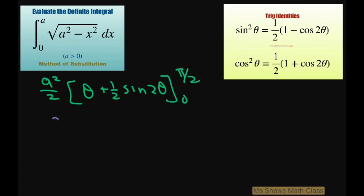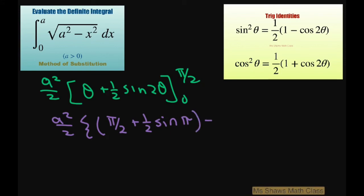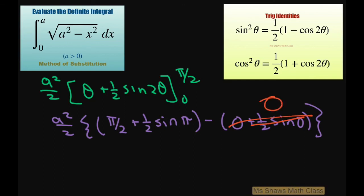Substituting in the limits: A squared divided by two times pi over two plus one half sine of two times pi over two, which is sine of pi, minus zero plus one half sine of zero. Sine of pi is zero and sine of zero is zero, so both of those terms vanish. The final answer is A squared times pi divided by four.